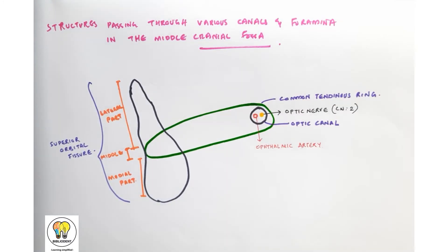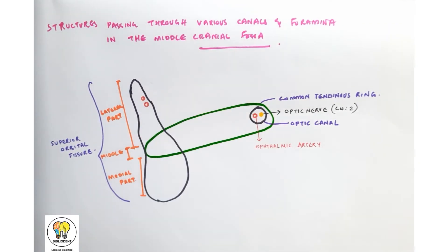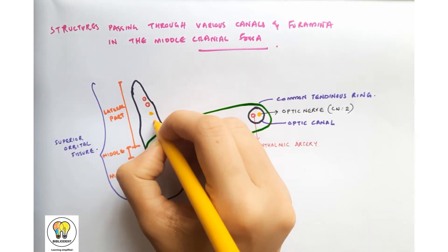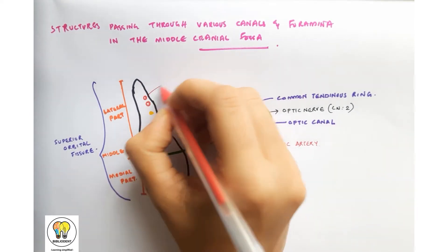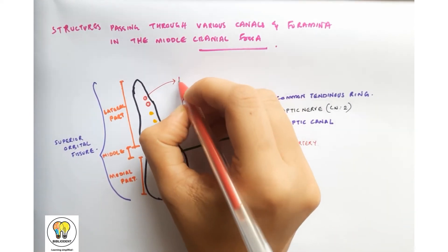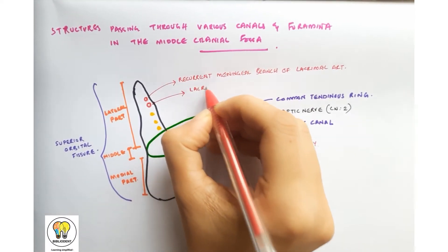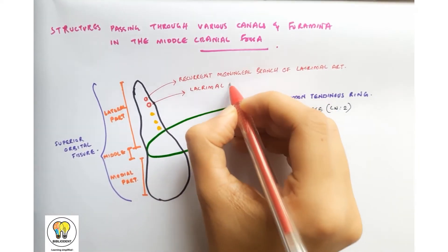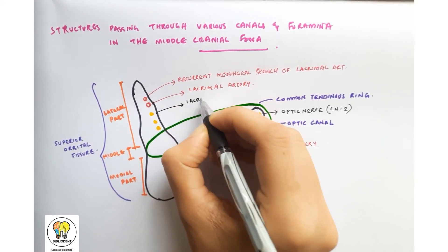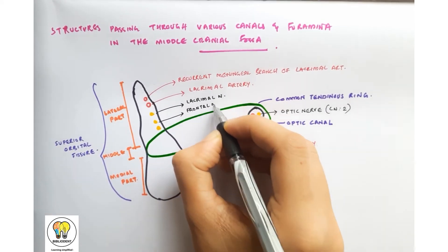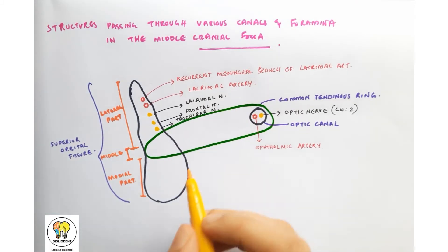In the lateral part of the superior orbital fissure there are two arteries and three nerves. One artery is the recurrent meningeal branch of the lacrimal artery, and the other is the lacrimal artery. The nerves are the lacrimal nerve, frontal nerve, and trochlear nerve.